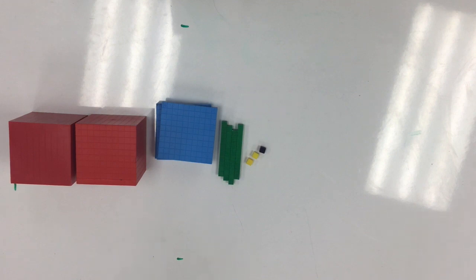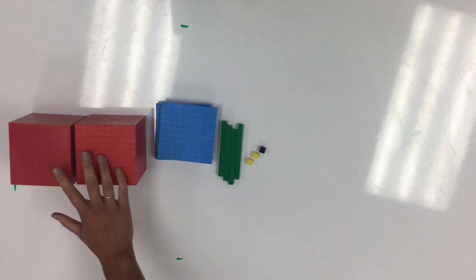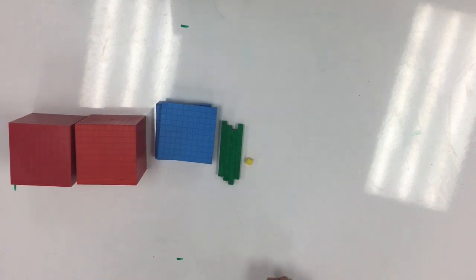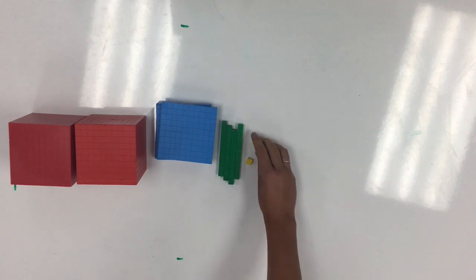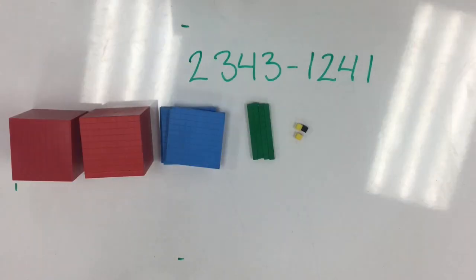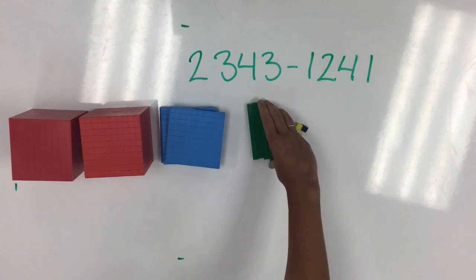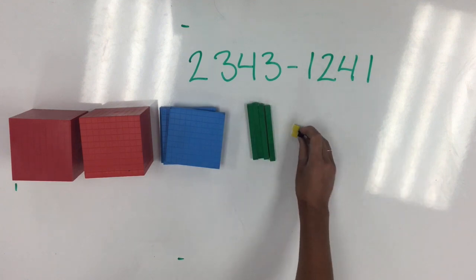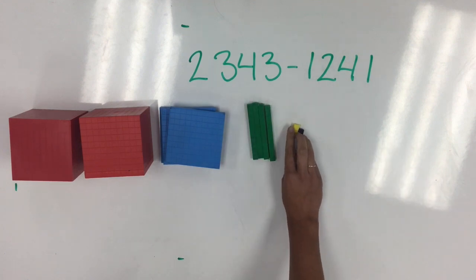It's great to use Dean's when we subtract because we can actually show what we're taking away. When we subtract using the Dean's, we want to actually pick up and move our Dean's in order to take them away.